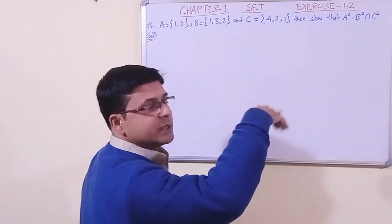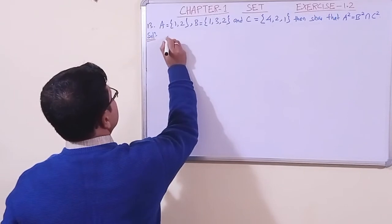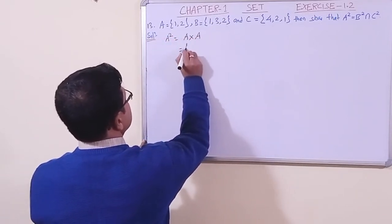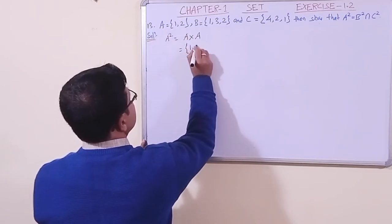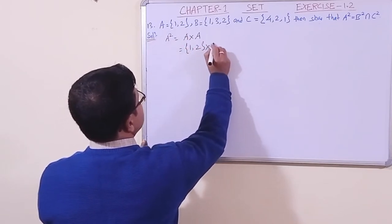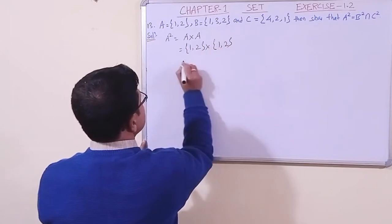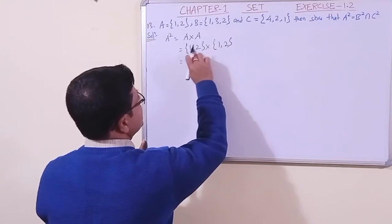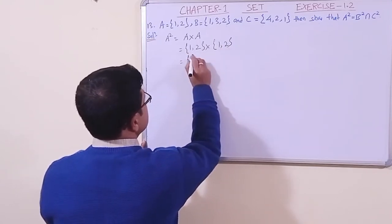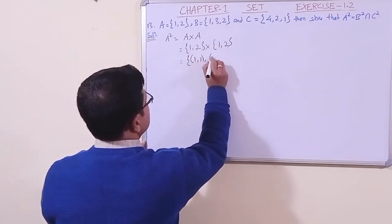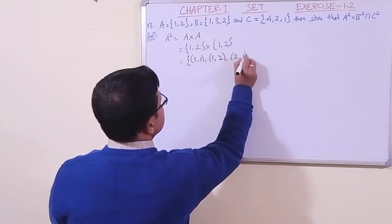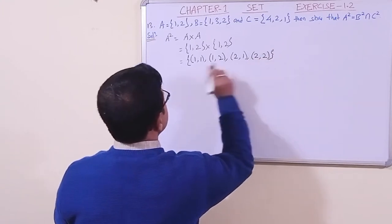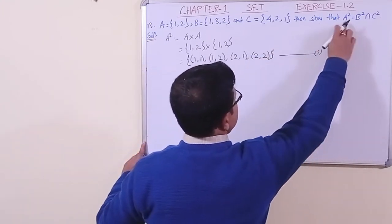So let us write. At first let us find all A square, B square, C square, then we'll compare. A square, what is A square? A cross A. So let us write, what is A? 1, 2. Set A again 1, 2. Now let us make ordered pair: 1 with 1, 1 with 2, 2 with 1, 2 with 2. So (1,1), (1,2), (2,1), (2,2). We have made A square, say this is equation 1 because at the end we need this.